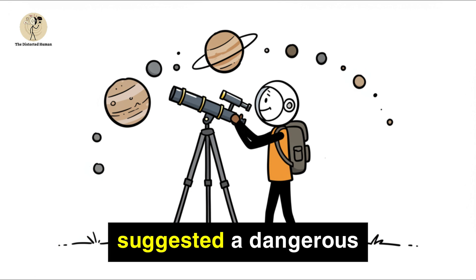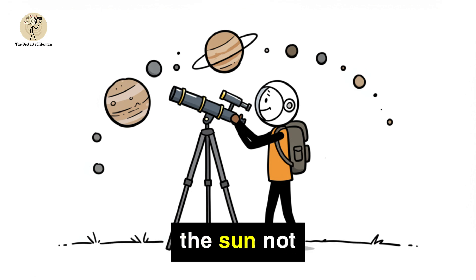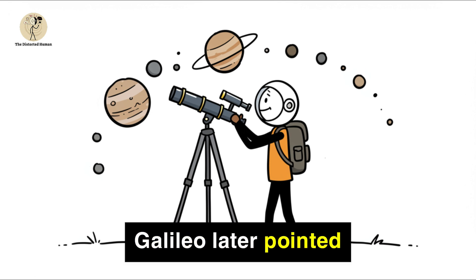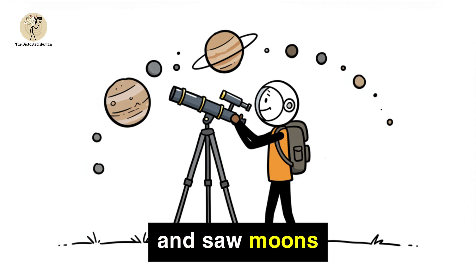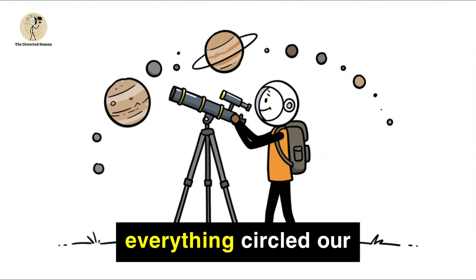But thinkers like Copernicus suggested a dangerous alternative: the Sun, not Earth, was the true center. Galileo later pointed his telescope at Jupiter and saw moons orbiting it, proof that not everything circled our planet.